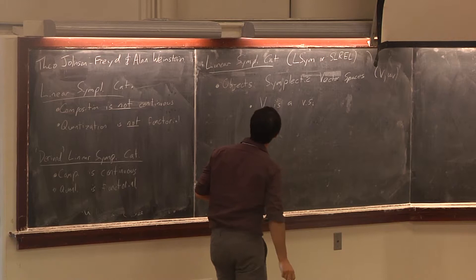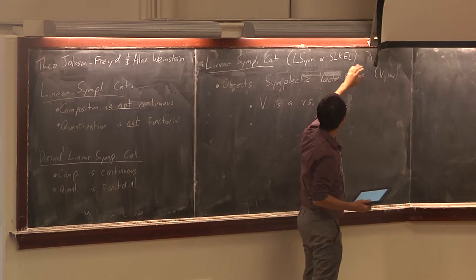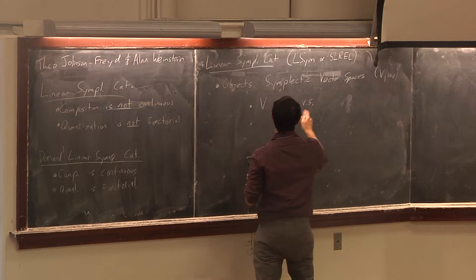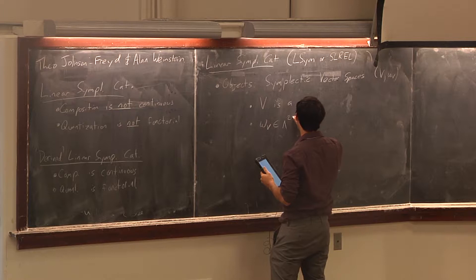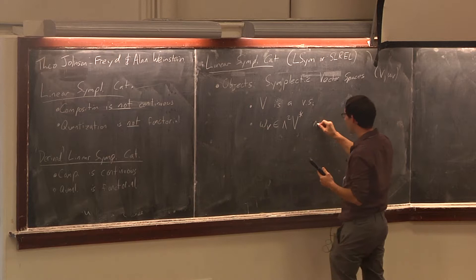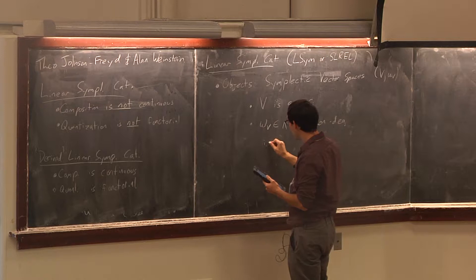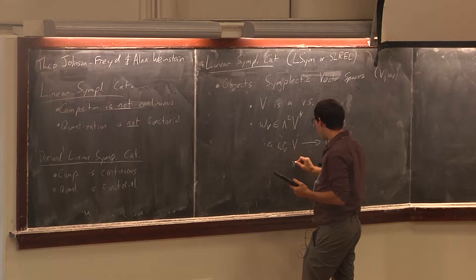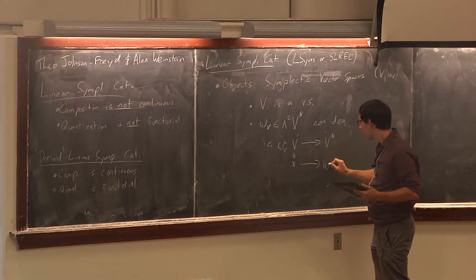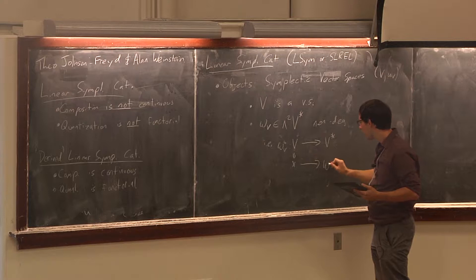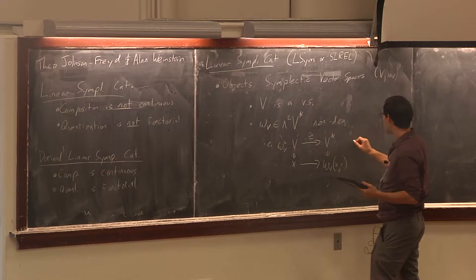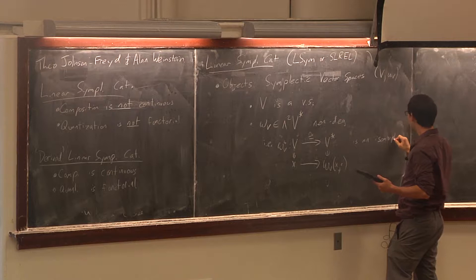What is the linear symplectic category? I'll denote it by LSim, or as Alan denoted it this morning, by SLRAL. The objects are symplectic vector spaces — pairs V where V is a vector space equipped with a two-form, an element of wedge-two of V-dual, which we assume is non-degenerate. Given this two-form, I can define a map omega-V-flat from V to V-dual by plugging into the first component, and non-degeneracy means this map is an isomorphism.